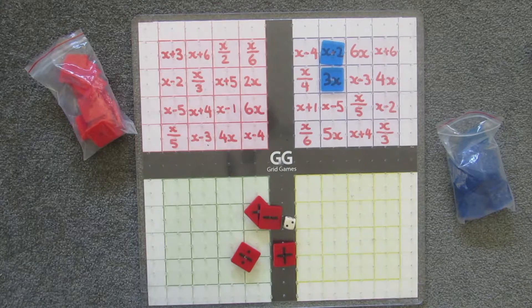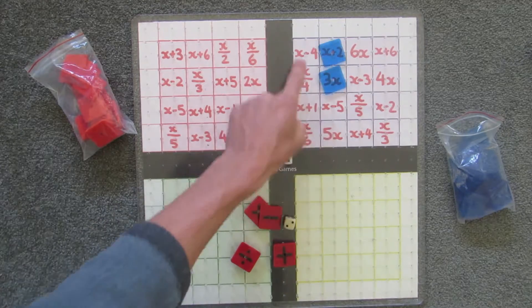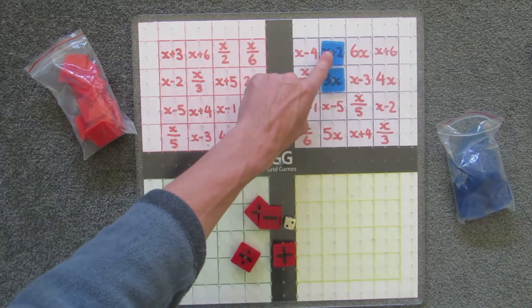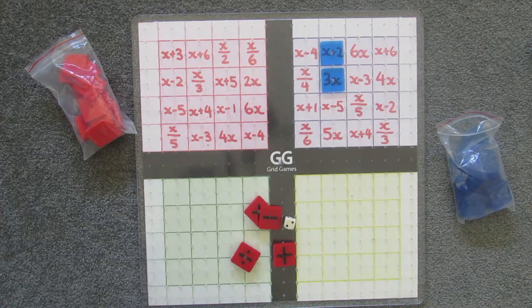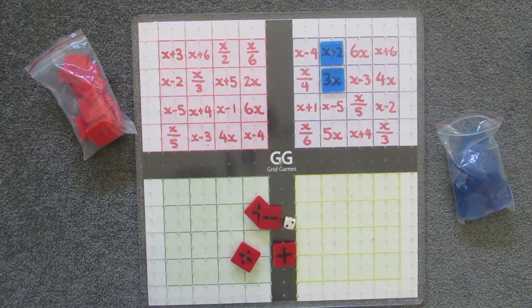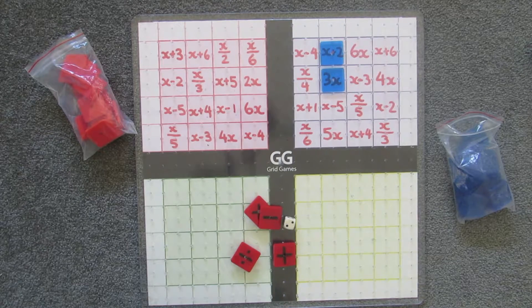Now to win this game, there's two ways. You can either get four in a row, diagonally or adjacent to each other. Or you can wait until all the squares on the board are covered. So if you want a quick game, go for four in a row. If you want a longer game, wait until all the squares are covered.